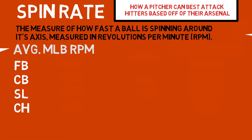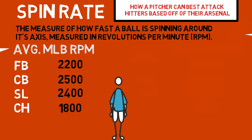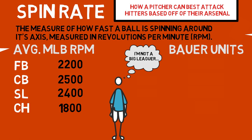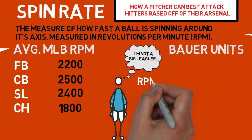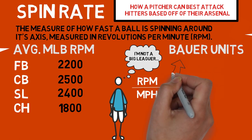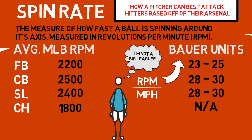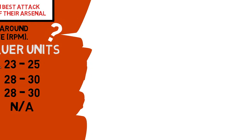But what about the other pitches? Here are the average spin rates on MLB pitches for the four major pitch types. Those numbers still apply if you're not a big leaguer — that's where Bauer units come in. Think of this as a more advanced version of spin rate. Spin rate is highly affected by how fast a pitcher can throw, so this unit takes velocity out of the equation to normalize data across all velocities. It's calculated by dividing spin rate by each pitch's speed. Here are the average numbers you'll get from this equation — see where you stand. If you're above these ranges, you have above average spin; if below, you have below average spin. Pitch accordingly.